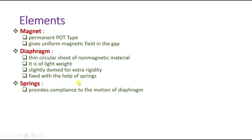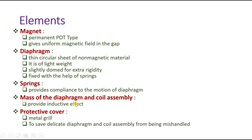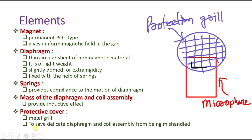The spring is there to provide compliance motion to the diaphragm. The mass of the diaphragm and coil provides an inductive effect, and based on electromagnetic induction it generates EMF. There is also a protection cover — a metal grill — used to protect the diaphragm, because the diaphragm is very delicate and needs extra protection.